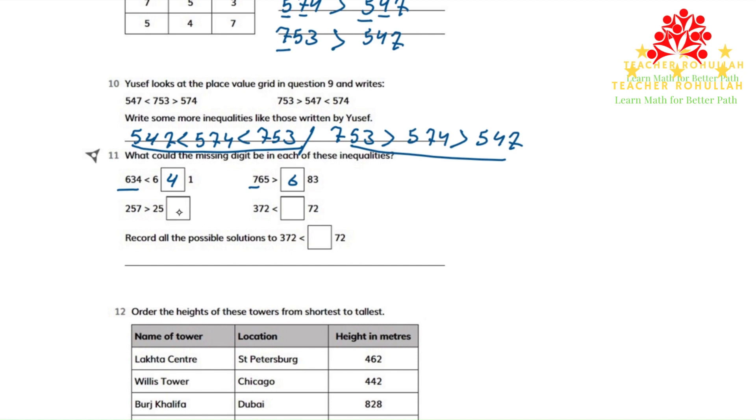And the third inequality, the missing number is in the ones place. So the number to the left is 257, which is greater than the number to the right. We have the hundreds place, we have the tens place, and we don't have the ones place. So the ones place can be 256 because 256 is less than 257.